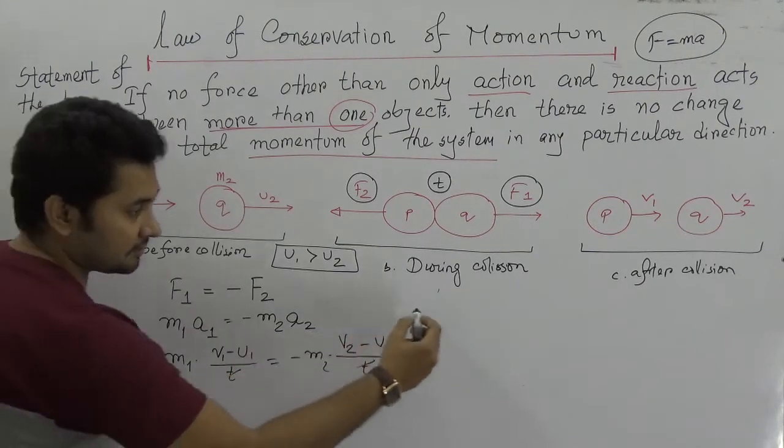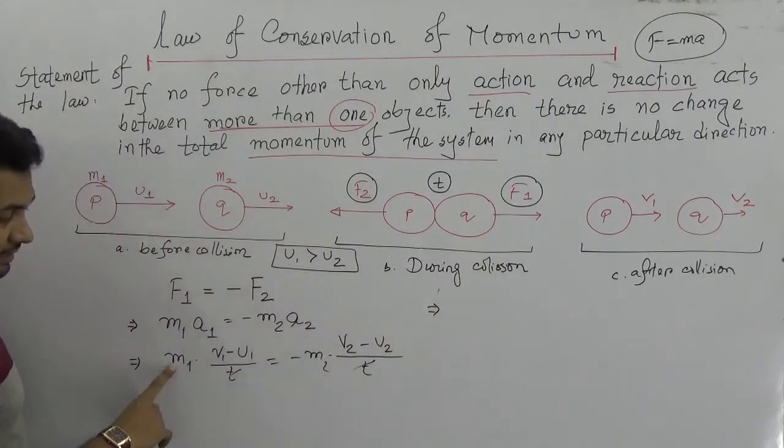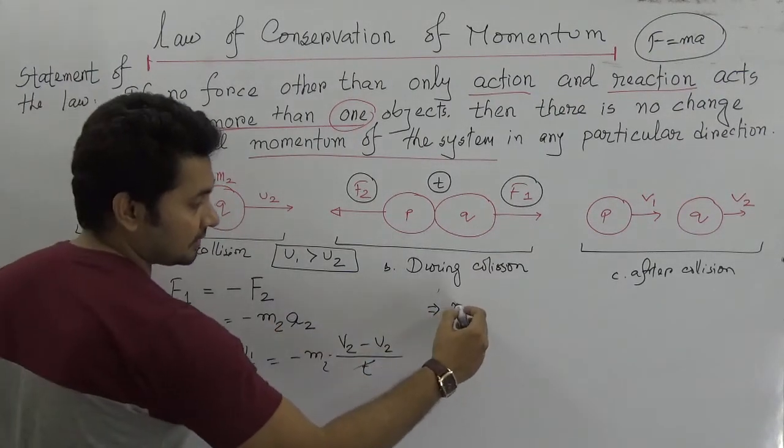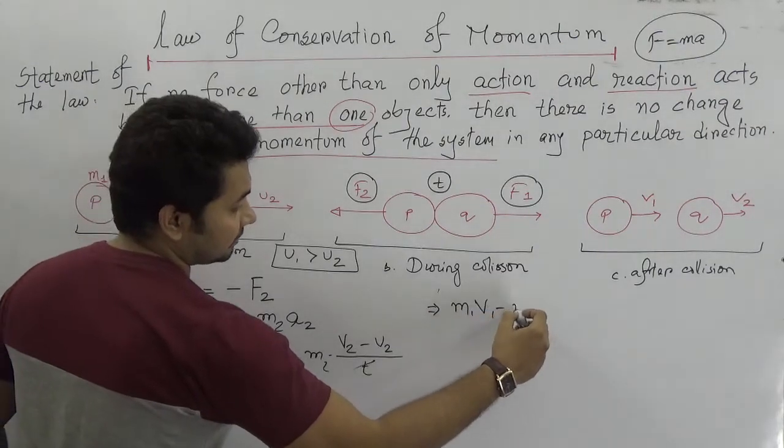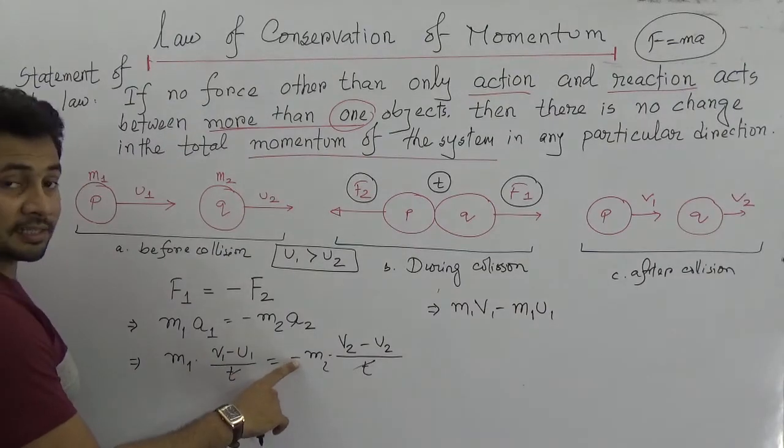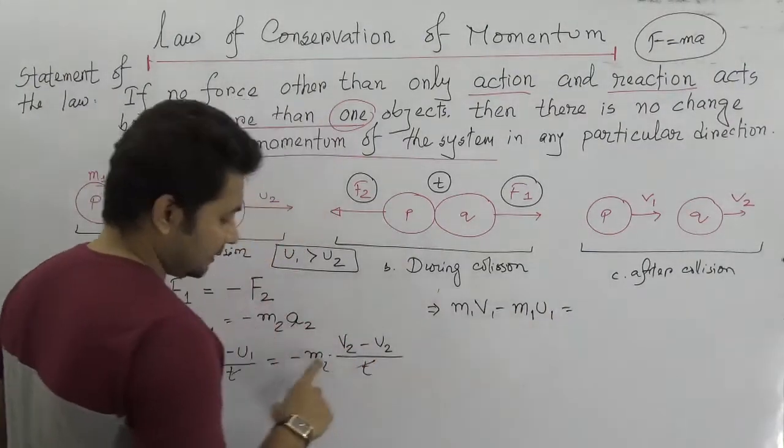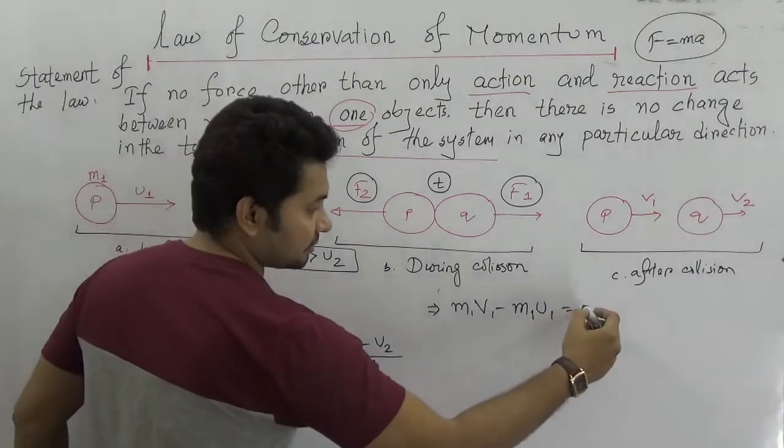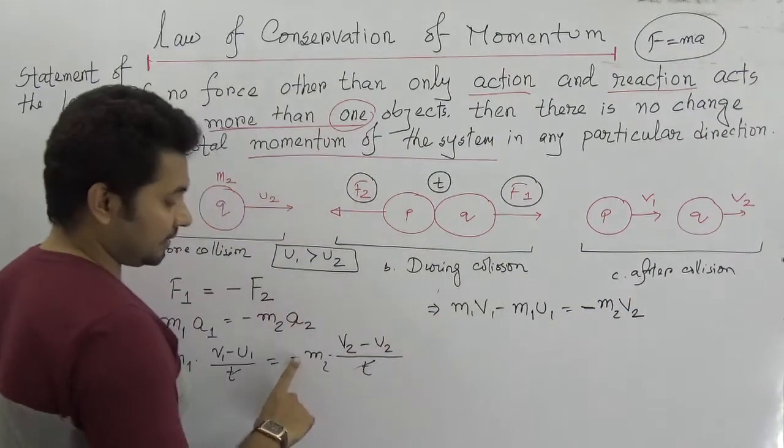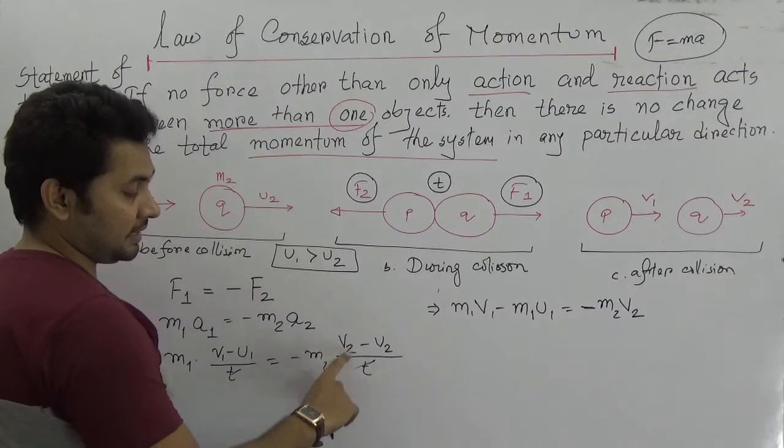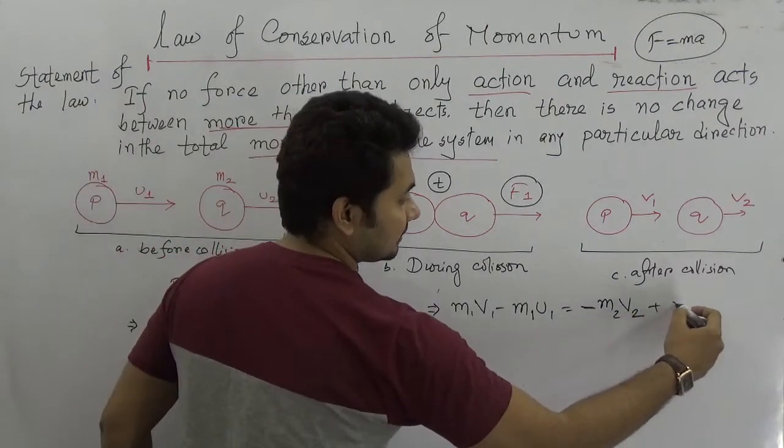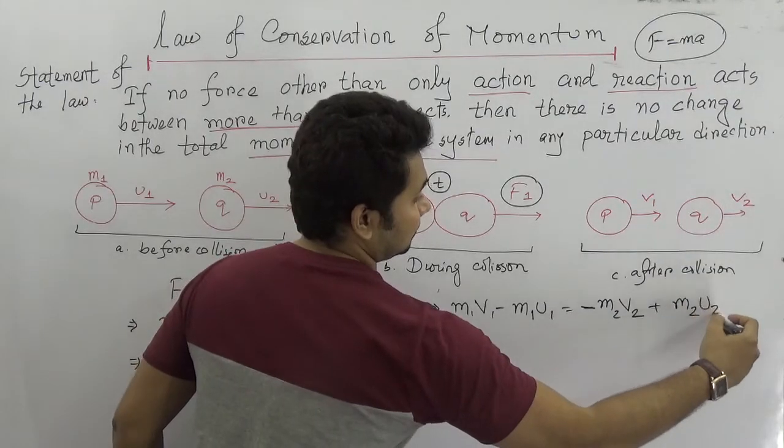So we can omit this T from both parts. We can have a new equation: M1V1 minus M1U1, and we can have M2V2 minus M2U2, and this minus cross minus is plus. So it would be plus M2U2.